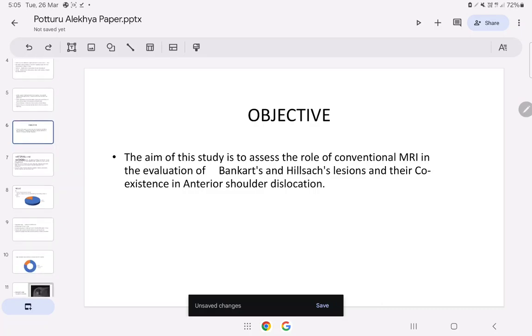Objective: Aim of this study is to assess the role of conventional MRI in evaluation of Bankart and Hill-Sachs and their coexistence in anterior shoulder dislocation.